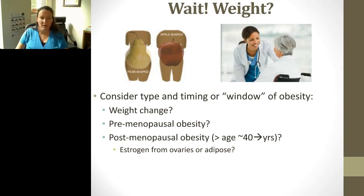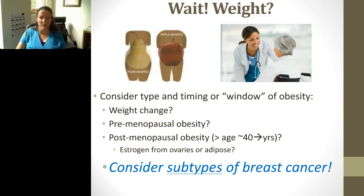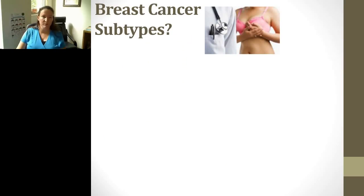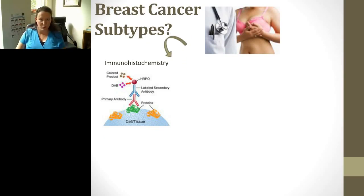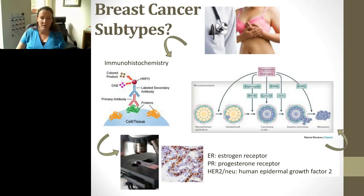When we talk about obesity, we need to consider the type and timing. Is there a weight change from adolescence to adulthood or from early to late adulthood? Can we categorize by pre-menopausal or post-menopausal obesity? After menopause, ovaries decrease estrogen production, and we can get estrogen from adipose tissue. We also need to consider different subtypes of breast cancer. When you get a diagnosis, a biopsy is taken and immunohistochemistry looks at the estrogen receptor, progesterone receptor, or HER2-neu epidermal growth factor to categorize the subtype and guide treatment.